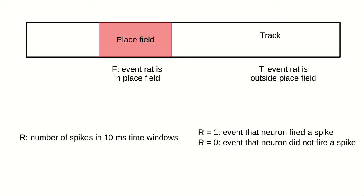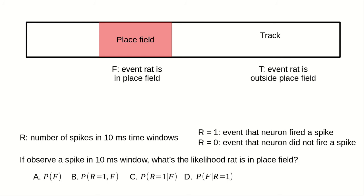In the example where I observed a spike and asked for the likelihood that the rat was in the place field, what probability was I asking for? Was it A, P of F, B, P of R equals 1 and F, C, P of R equals 1 given F, or D, P of F given R equals 1? Since we observed a spike, we are conditioning on the event R equals 1, and so we would like to calculate D, P of F given R equals 1.